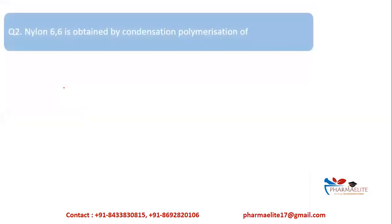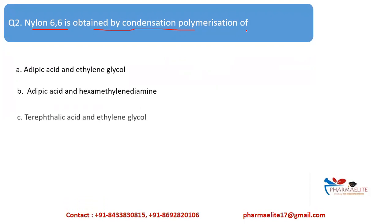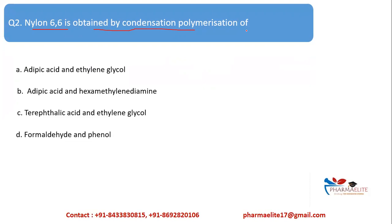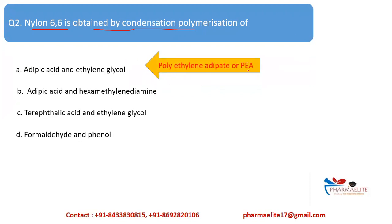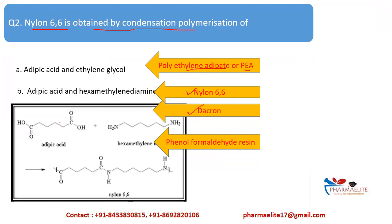Question 2: Nylon 6,6 is obtained by condensation polymerization of — (a) adipic acid and ethylene glycol, (b) adipic acid and hexamethylene diamine, (c) terephthalic acid and ethylene glycol, (d) formaldehyde and phenol. Adipic acid and ethylene glycol give polyethylene adipate; terephthalic acid and ethylene glycol give Dacron; phenol and formaldehyde give phenol-formaldehyde resin. Adipic acid condenses with hexamethylene diamine with loss of water to form Nylon 6,6 — so the correct answer is option (b).